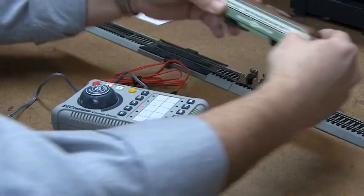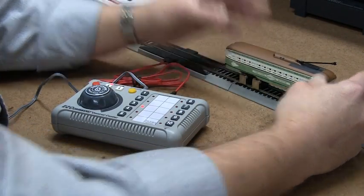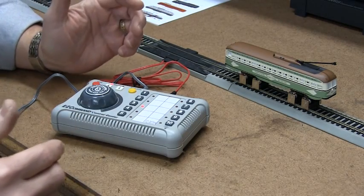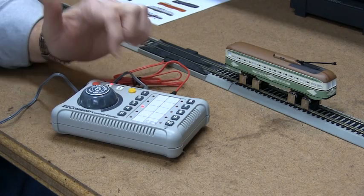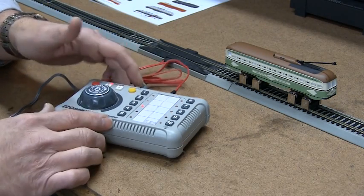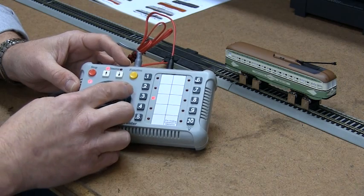So we'll put the car on our little rollers here. Make sure my power is down. Put it on the rollers. Now each car as it comes out of the package, any DCC loco or car is going to come as address number three. So I have address three selected on my easy command here and you can see the light is on.